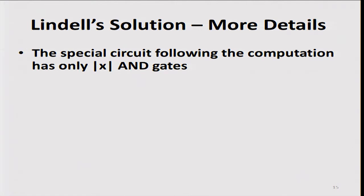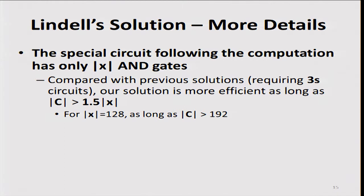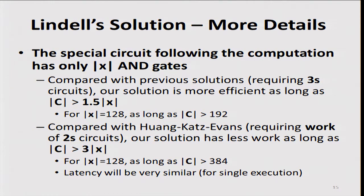The special circuit has only one AND gate for every input bit of Alice. Comparing with previous solutions that needed 3s circuits to get 2 to the minus s error, as long as the circuit we're computing is one and a half times the size of Alice's input, everything's fine. For the AES circuit with 128 bits of input for Alice, as long as the circuit is bigger than 192 gates, my protocol will be much quicker. Compared with the next work by Huang, Katz and Evans, as long as the circuit is three times as long as Alice's input, my protocol will be quicker. In terms of latency they'll be similar, but if we're running things in parallel, we can do twice the throughput because we only have s circuits for one party rather than both sides. I'll hand over now to Yen to present his solution.